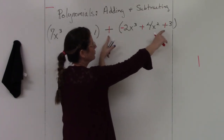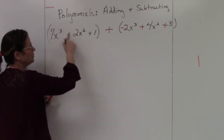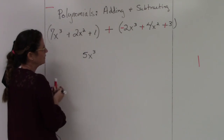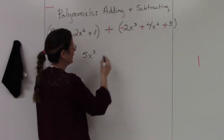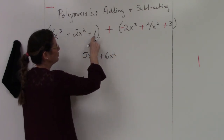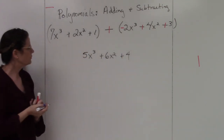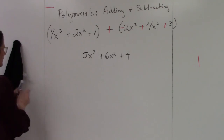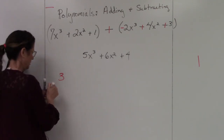Now add like terms: 7x³ − 2x³ = 5x³. Then 2x² + 4x² = 6x². Finally, 1 + 3 = positive 4. So the result is 5x³ + 6x² + 4.